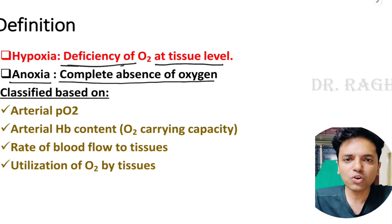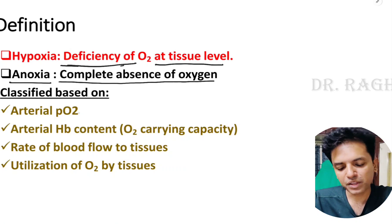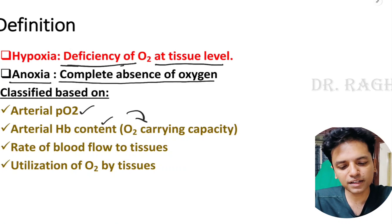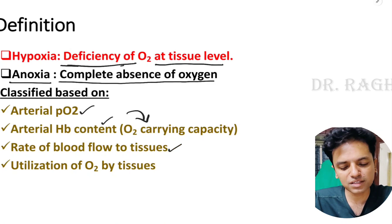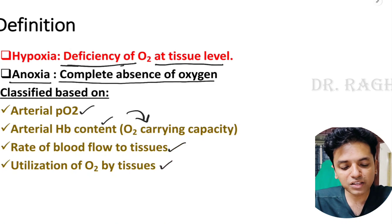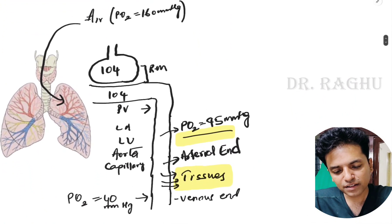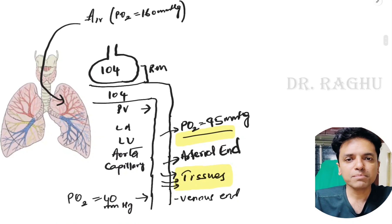There are four parameters based on which hypoxia is classified: arterial partial pressure of oxygen; arterial hemoglobin content, which indirectly translates into oxygen carrying capacity; the rate of blood flowing to the tissues; and the utilization of oxygen by the tissues.